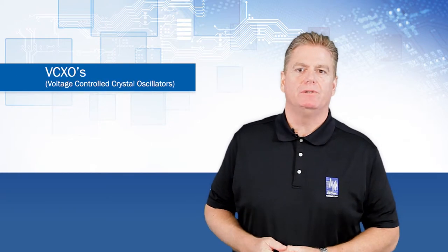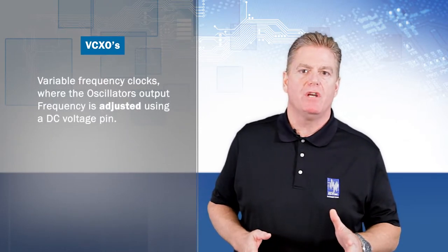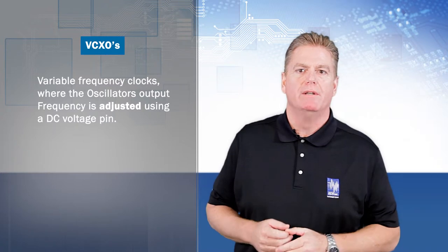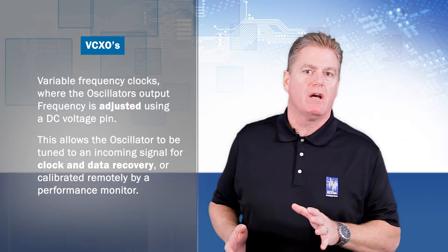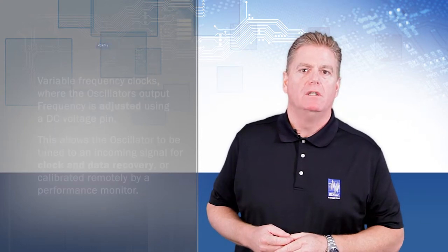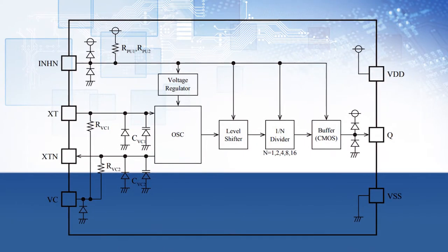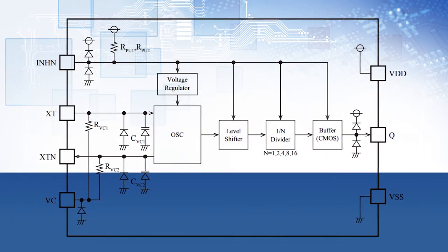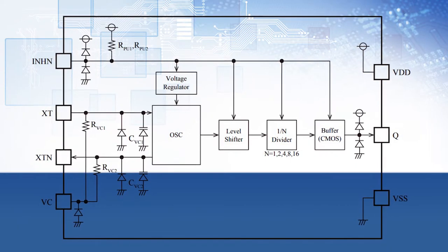Next we have the VCXOs. VCXOs, or voltage-controlled crystal oscillators, are variable frequency clocks where the oscillator output frequency is adjusted using a DC voltage pin. This allows the oscillator to be tuned to an incoming signal for clock and data recovery, or calibrated remotely by a performance monitor, whereby most of the deviation in the frequency is removed through the voltage control pin. VCXOs can offer pull ranges in the hundreds of parts per million, depending on the application.